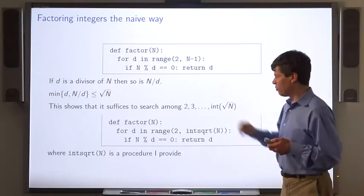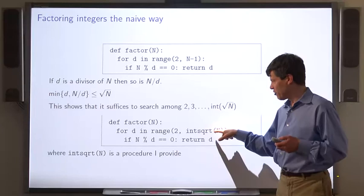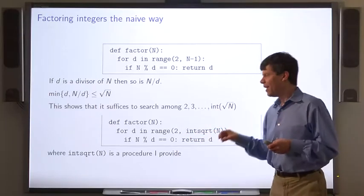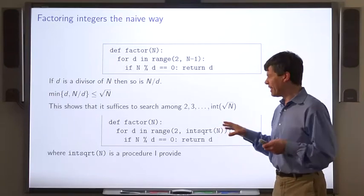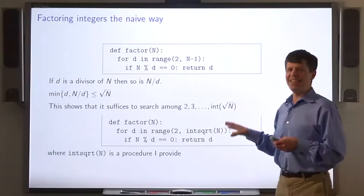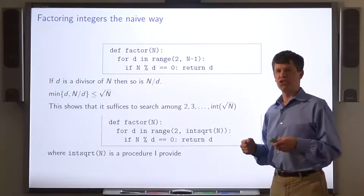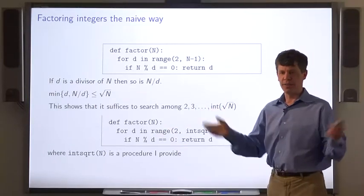So here's the revised version. I'm using this procedure int_sqrt, which I'll provide. Unfortunately, or fortunately for RSA, this algorithm is very slow.